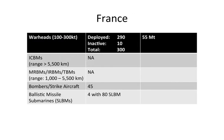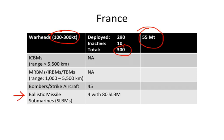Here's France. Warheads in the 100 to 300 kiloton range, a total of 300 warheads, and an estimated total explosive power of 55 megatons in the arsenal. Again, it's an example of a nuclear-armed state that has placed most of its weapons onto ballistic missile submarines — four submarines with 80 submarine-launched ballistic missiles.